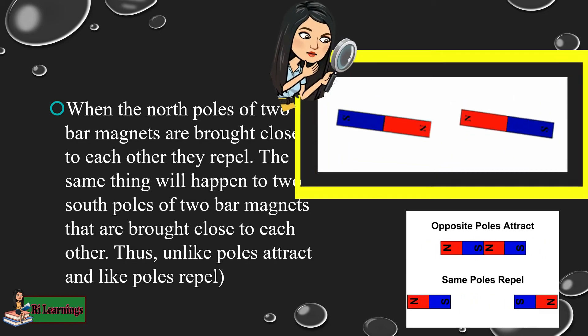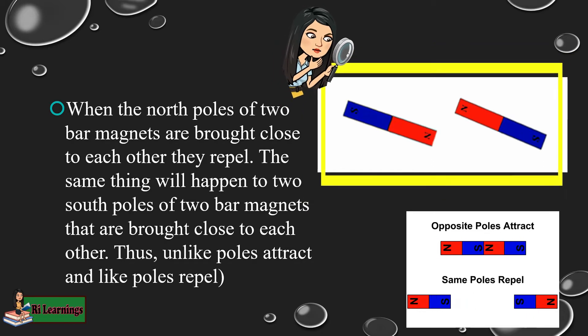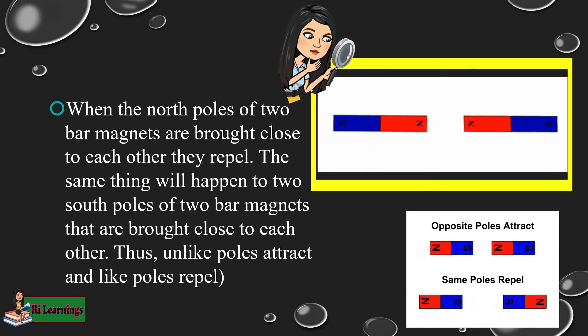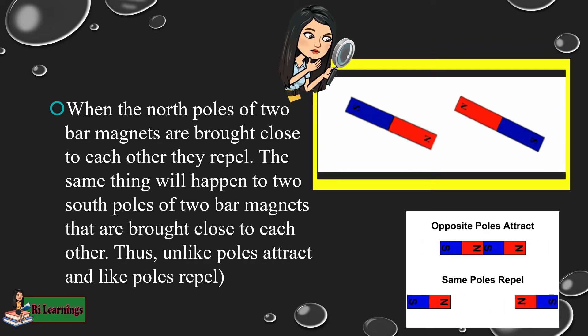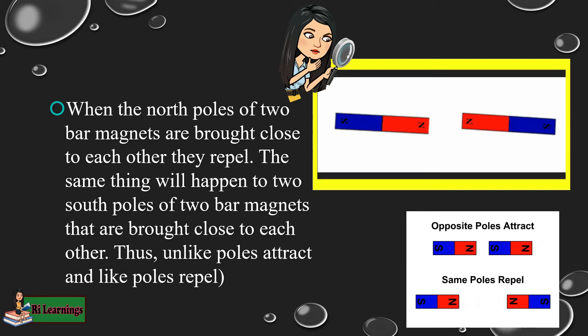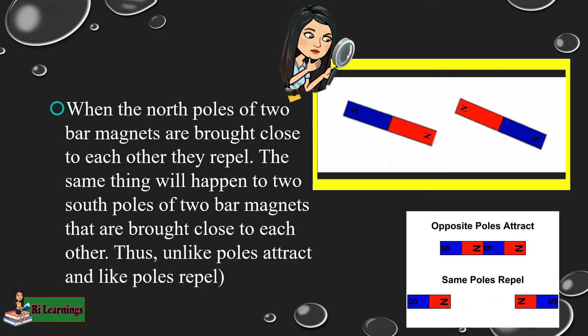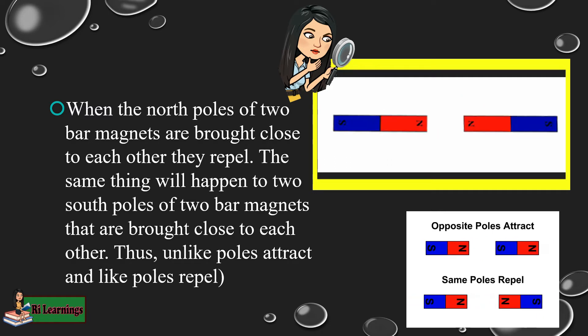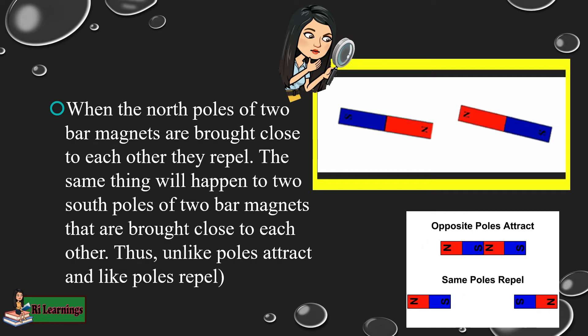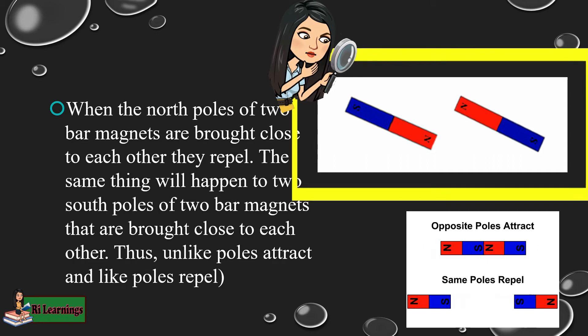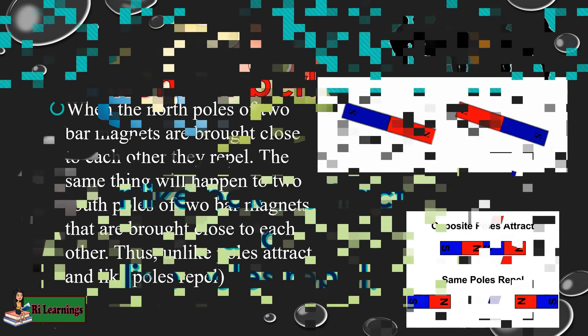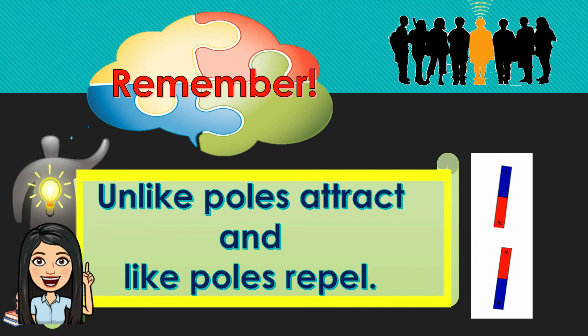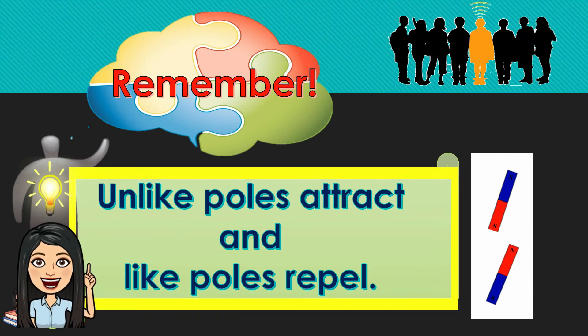On the other hand, when the north poles of two bar magnets are brought close to each other, they repel. The same thing will happen to two south poles of two bar magnets that are brought close to each other. Thus, unlike poles attract and like poles repel. This is shown on our illustration at the right side. Take note of this: unlike poles attract and like poles repel.